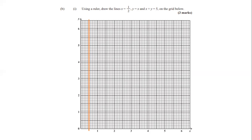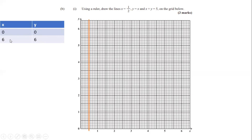For y = x: we make x = 0, giving y = 0, and then x = 6, giving y = 6. We draw a line through these two points. This line extends indefinitely — when x is 10, y is 10; when x is negative 20, y is negative 20. Whatever the value of x, y equals the same. This line is represented by the green line on our graph.